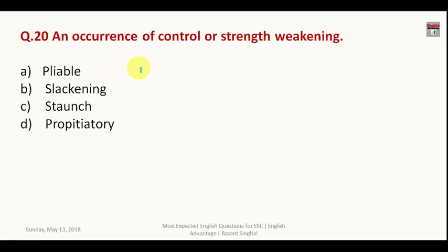Question twenty: 'An occurrence of control or strength weakening' — the answer is 'slackening'.